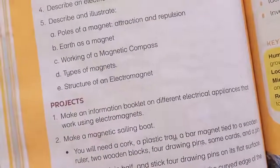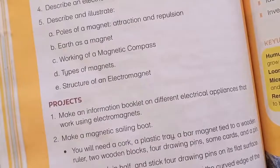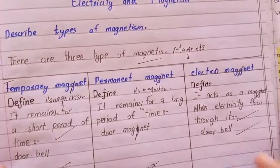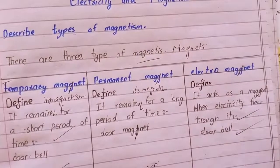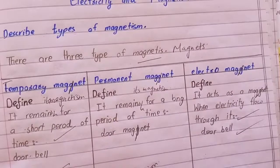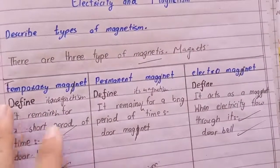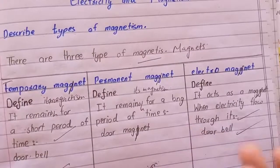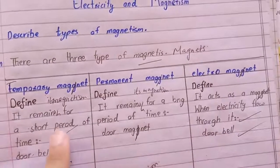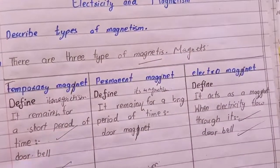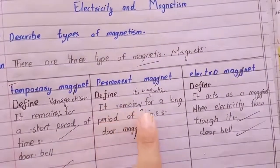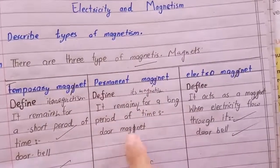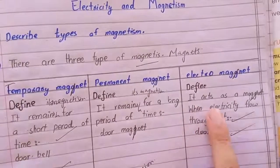There are three types of magnets: temporary magnets, permanent magnets, and electromagnets. A temporary magnet retains its magnetism for a shorter period of time, such as a doorbell. A permanent magnet retains its magnetism for a longer period of time, such as a door magnet.